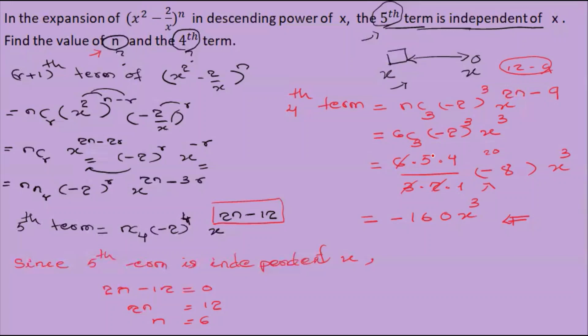The constant term means x power 0. When the power is 0, x power 0 equals 1, so the coefficient is just the numeric value. The middle term: for n equals 12, the middle term is the 7th term (since n plus 1 over 2). The middle term equals the 8th term.